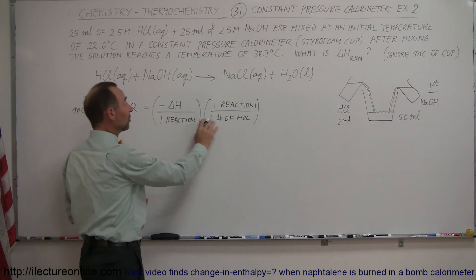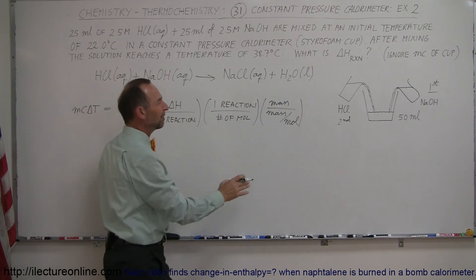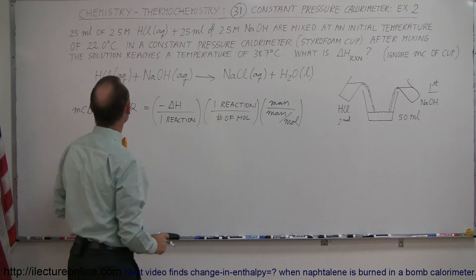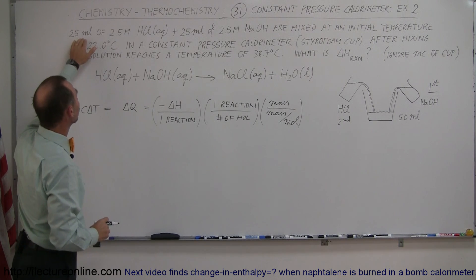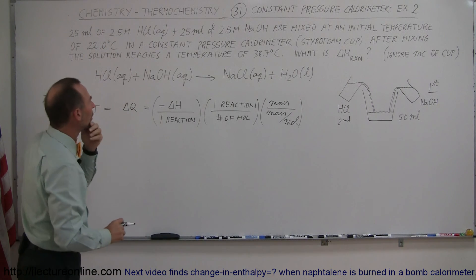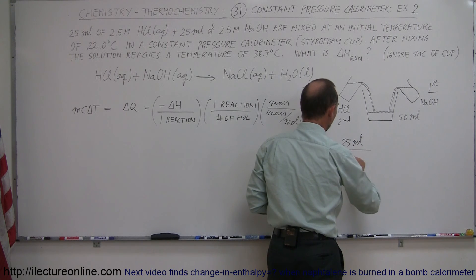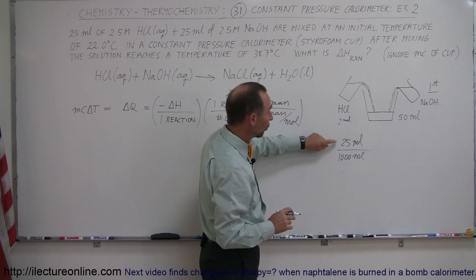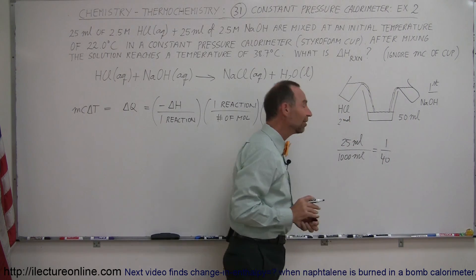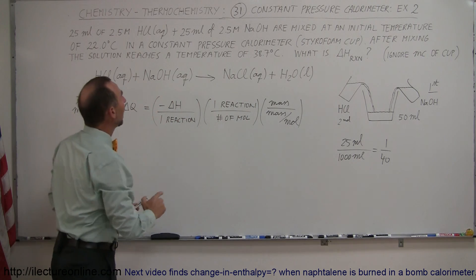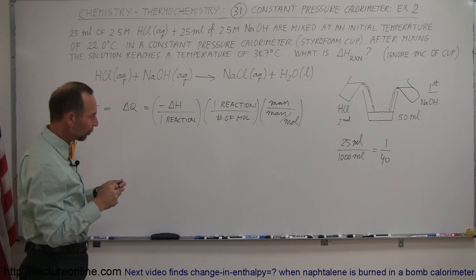It's a formality, but something we need to keep in mind in case it's not equal to one. We're going to put down the mass divided by the mass per mole — which is essentially just the number of moles in the solution. We have 25 milliliters of 2.5 molar HCl. If this were a liter, we'd have 2.5 moles, but since we only have 25 milliliters, that's 25 divided by 1000 — a ratio of 1 over 40 of a liter. So we have 1/40th of a mole of HCl and 1/40th of a mole of NaOH in there.